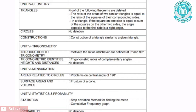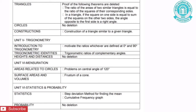Unit 7 is Statistics and Probability. The first chapter is Statistics. The topics removed are: Step Deviation Method for Finding the Mean, and Cumulative Frequency Graph. The second chapter is Probability — no topics have been removed from Probability.